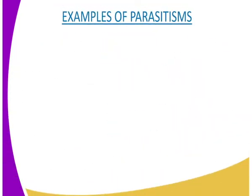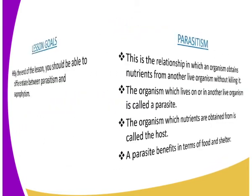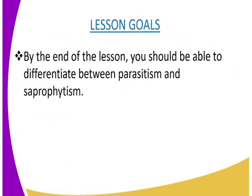In parasitism, this is the relationship in which an organism obtains nutrients from another living organism without killing it. This organism which feeds from the other living organism is called a parasite, while the one from which nutrients are obtained is called the host.